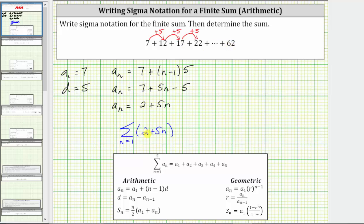we can set the formula two plus five n equal to 62 and solve for n. So if we set two plus five n equal to 62 and solve for n, we first subtract two on both sides of the equation. Simplifying, we have five n equals 60. Divide both sides by five. Simplifying, we have n equals 12.